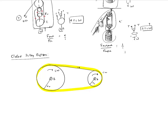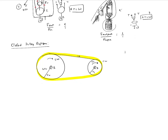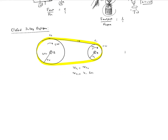We want to find the relationship between the angular velocity of the smaller pulley and the angular velocity of the larger pulley. Assuming no belt slippage, the velocity of contact point c1 equals the velocity of contact point c2. The velocity of c1 equals R1 times ω1, and the velocity of c2 equals R2 times ω2. Setting them equal gives R1·ω1 = R2·ω2, so ω2/ω1 = R1/R2. Since R1 is less than R2, this ratio is less than 1, meaning the output pulley rotates slower than the input.